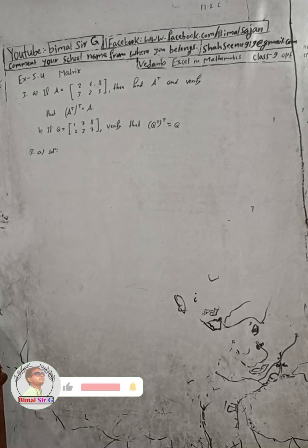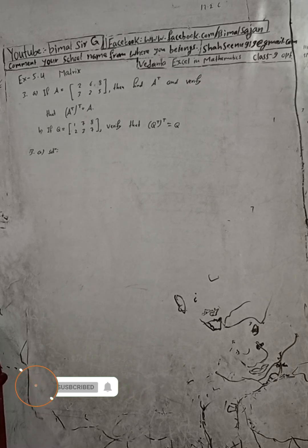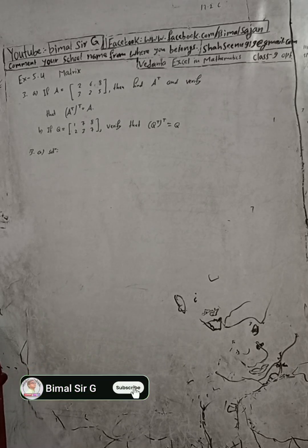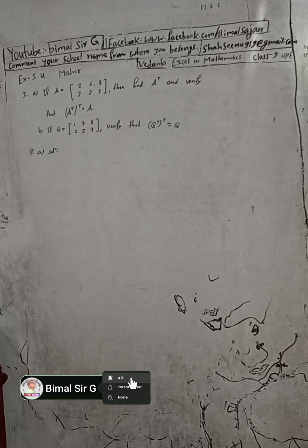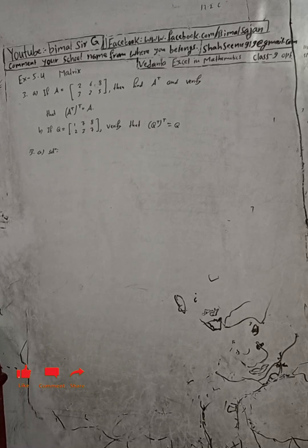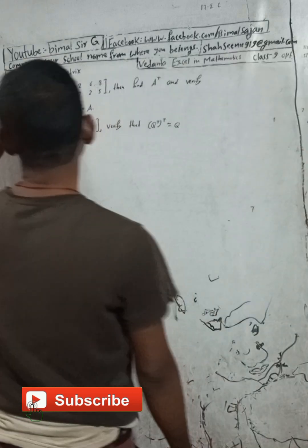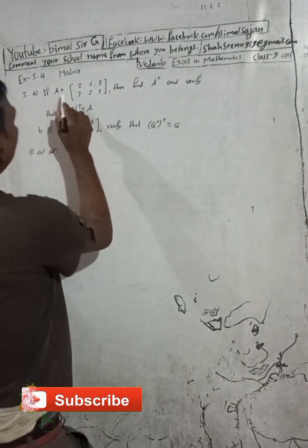Hi class 9 and 10 students, welcome back to Bimal Sarji's YouTube channel. This is question number three, exercise 5.4 on matrices from Vedanta Excel in Optional Mathematics class 9. Don't forget to check the playlist — you will get a lot of solutions there. The question for this exercise 5.4, number three: if A is equal to...